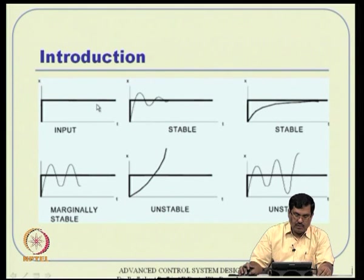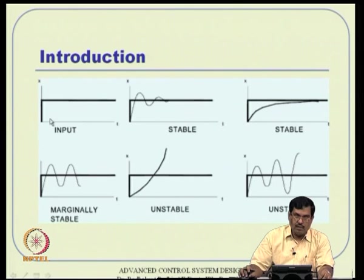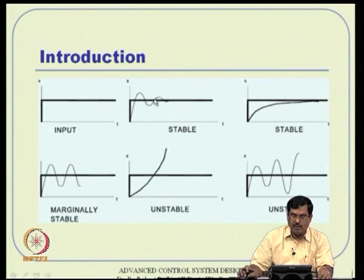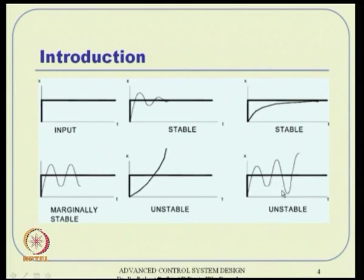As far as the response is concerned, the response can be of various nature. Suppose we give a step input starting at time 0. If the system is stable, it can oscillate around that input and stabilize, or it can go one-sided and approach that input — that is also stable. A response that goes unbounded is unstable, and a response that grows unbounded in a sinusoidal way is also unstable. If it remains marginally stable, it will keep on oscillating around that value forever.